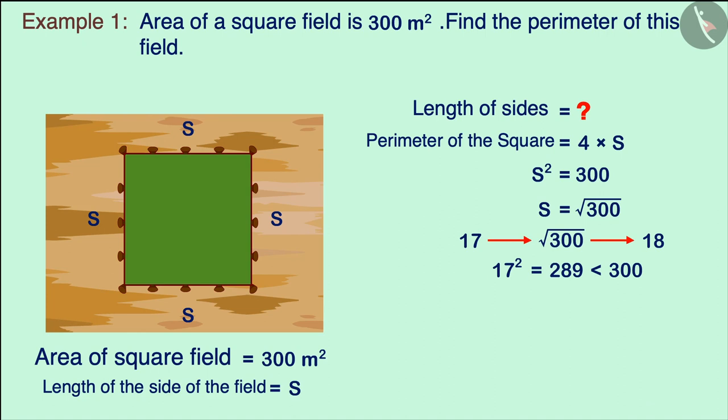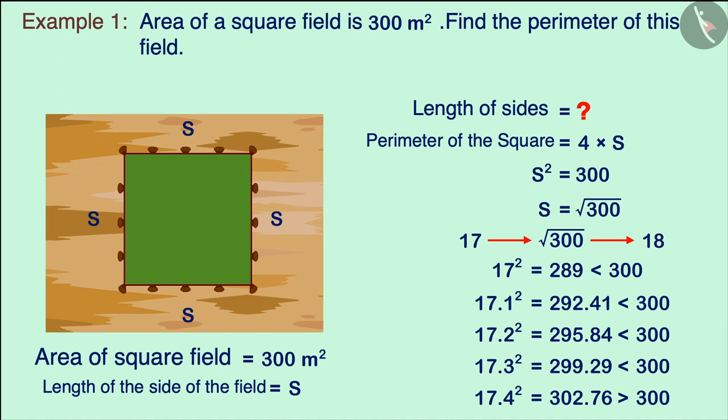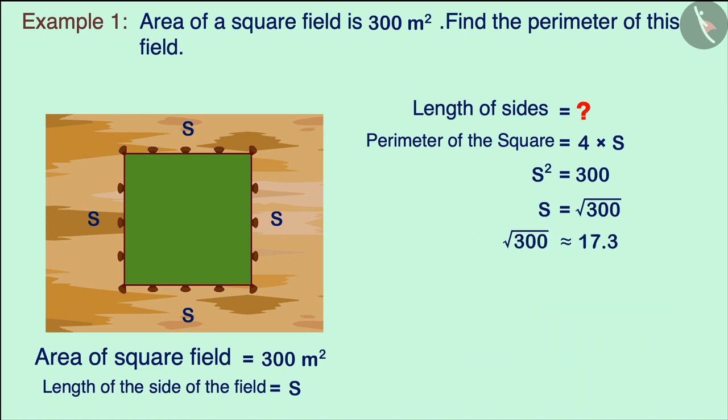Moving further, let us examine the squares of 17.1, 17.2, 17.3 and 17.4. Looking at the square of 17.3, we can say that the square of 17.3 is closest to 300. From this, we can infer that the square root of 300 will be approximately equal to 17.3.